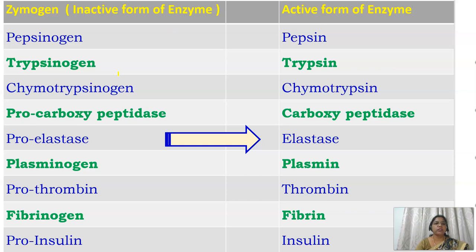This diagram shows both inactive and active forms of the enzymes. The inactive forms on the left are the zymogens. Pepsinogen is the inactive form, converted to the active pepsin. Trypsinogen is converted into trypsin. Chymotrypsinogen is converted into chymotrypsin. Pro-carboxypeptidase and pro-elastase are converted into carboxypeptidase and elastase, respectively.